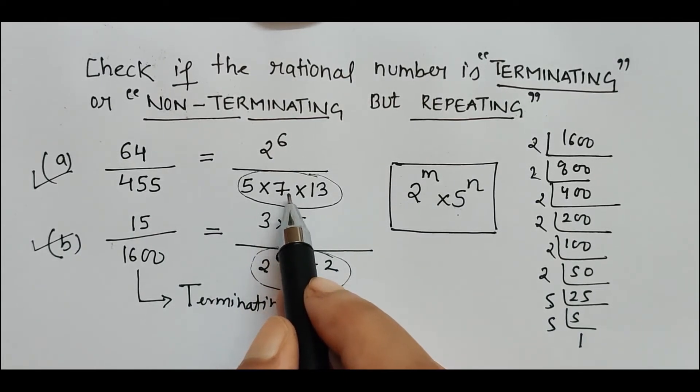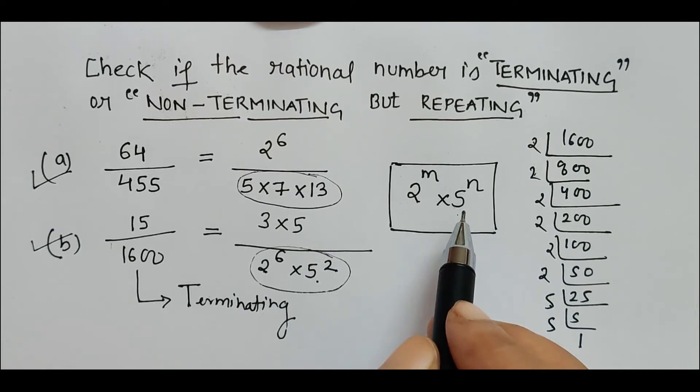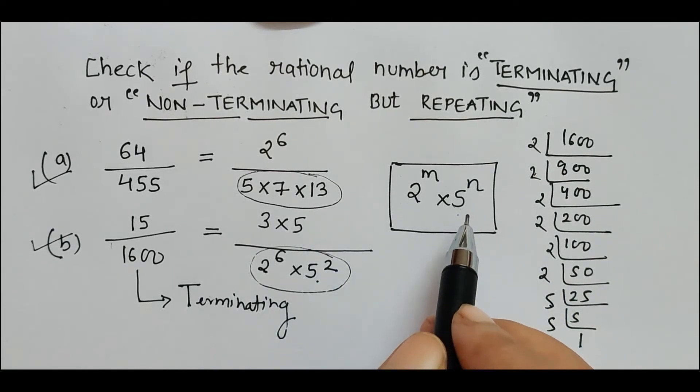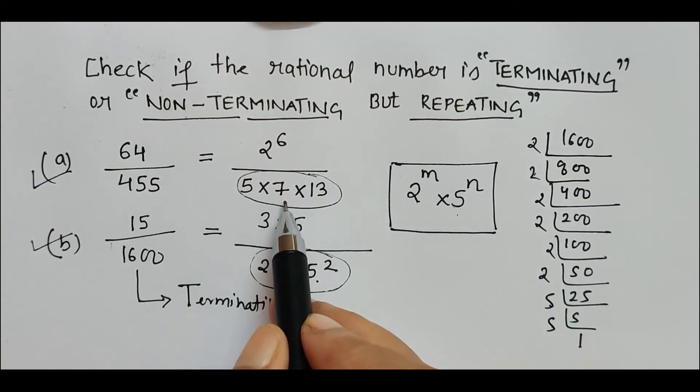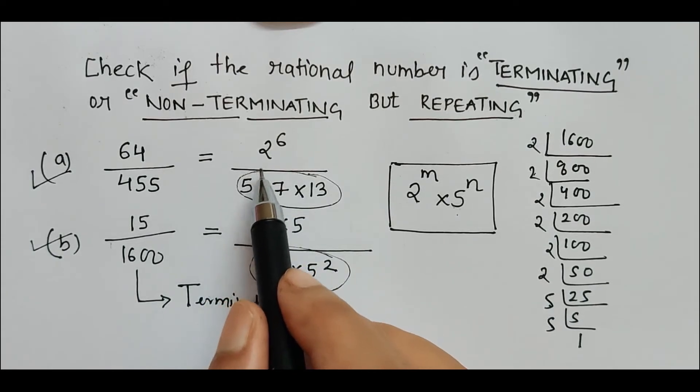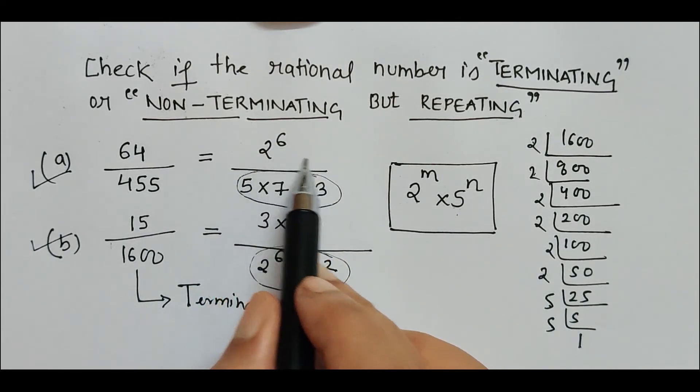But here, if we see, 7 is the extra prime number when compared to the required condition. No other number than 2 and 5 should be there in the denominator after the cancellation of any common factor in numerator and denominator. Here it is already in reduced form.